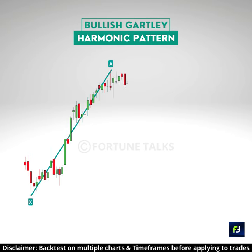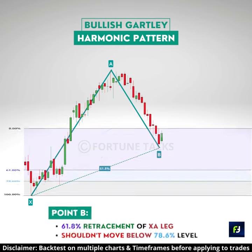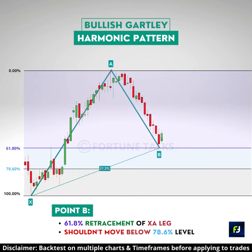The price then reverses from point A to end at point B. The AB move should ideally retrace to 61.8% of the XA move, and it should not move below the 78.6% level. If it does, the pattern is considered invalid.